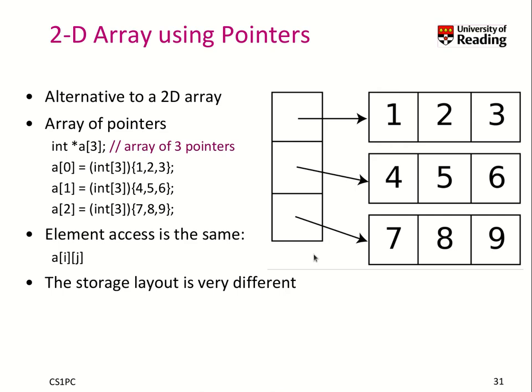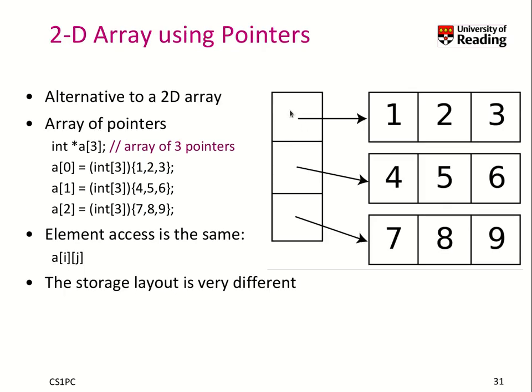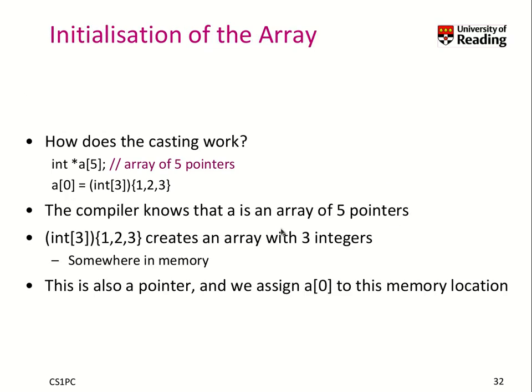So let's have a look quickly at how the casting actually works. So when I create here an array of five pointers to integers, that's somewhere in memory like this one here with three elements. For instance, I have just three memory addresses which store the pointers. So there is nothing yet done.